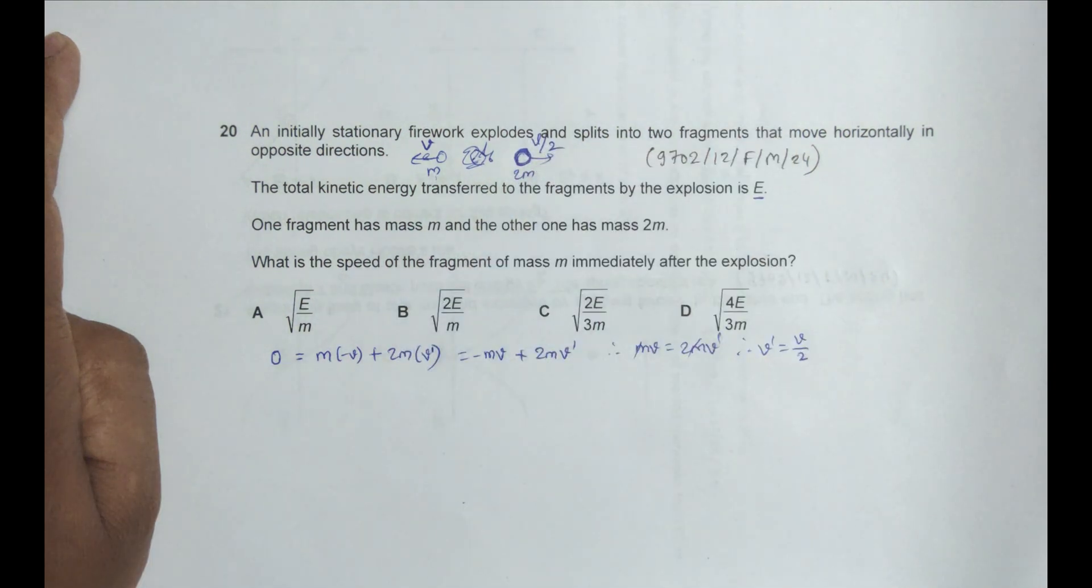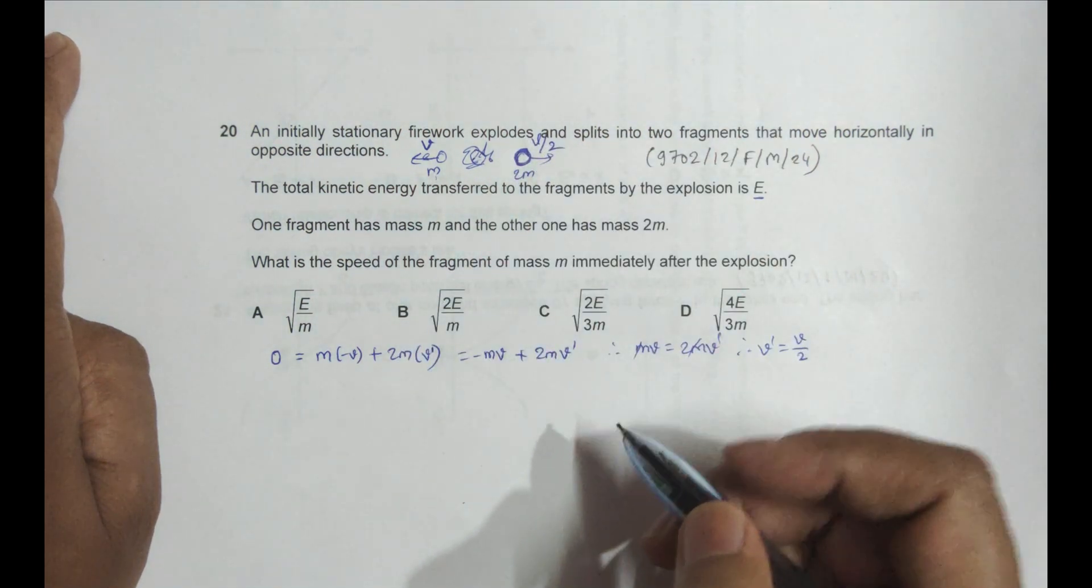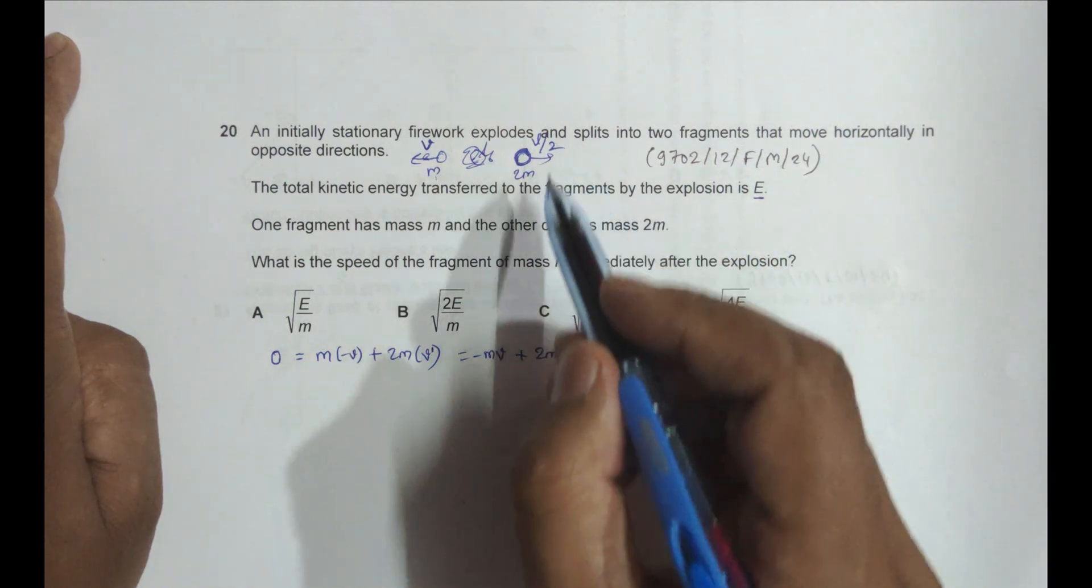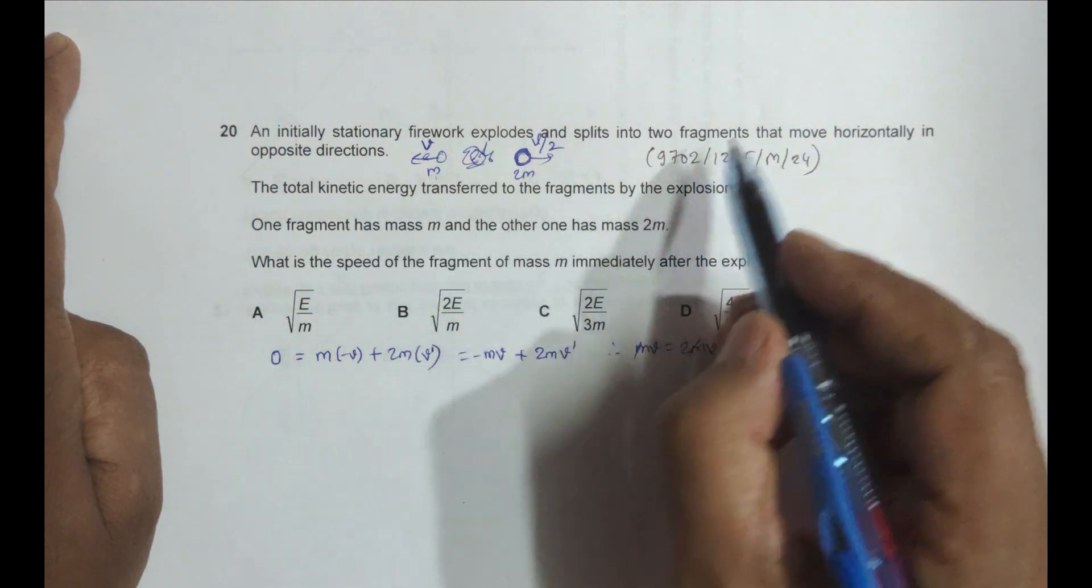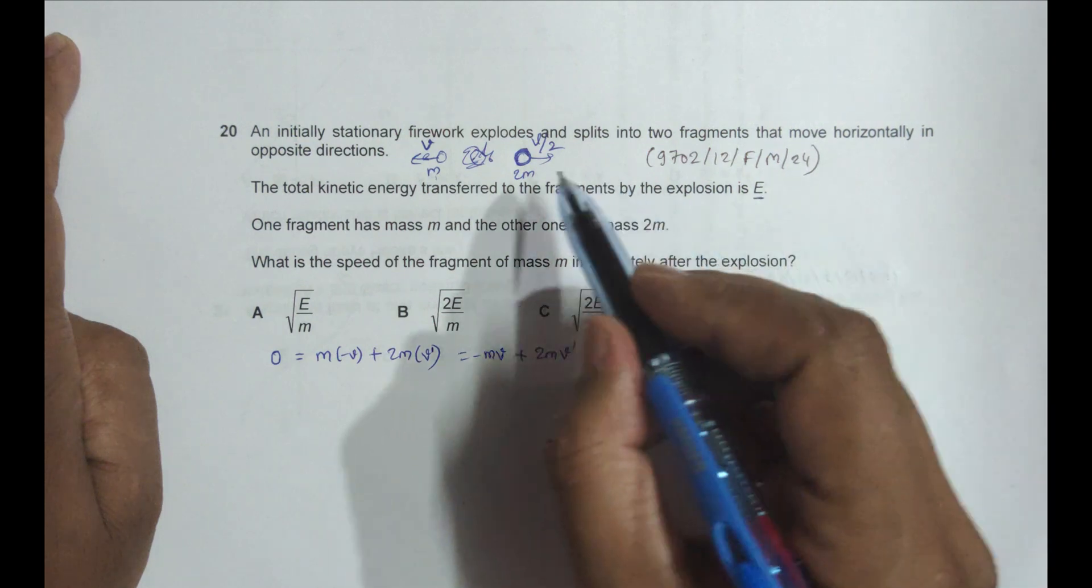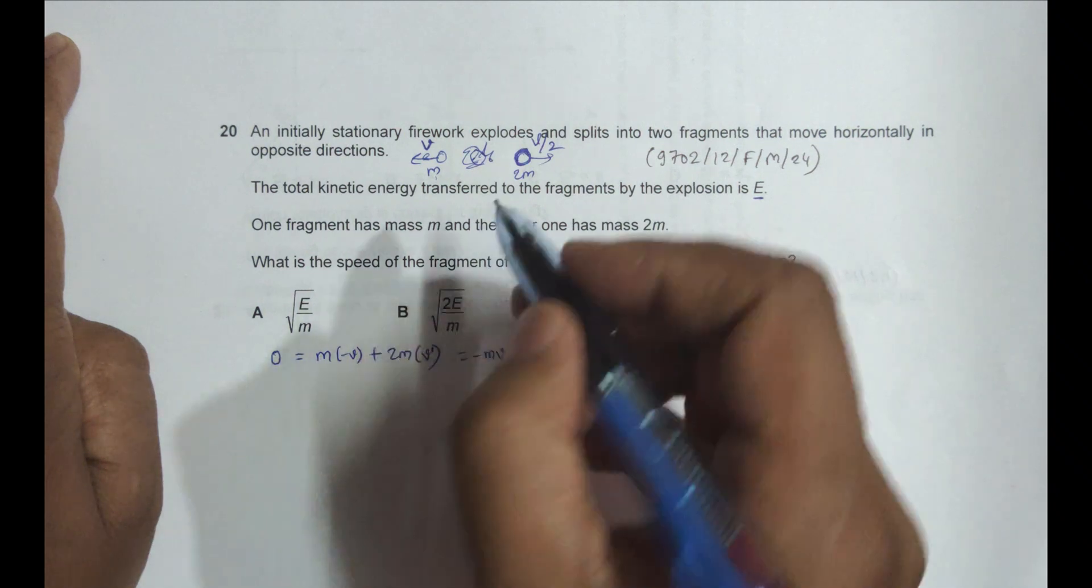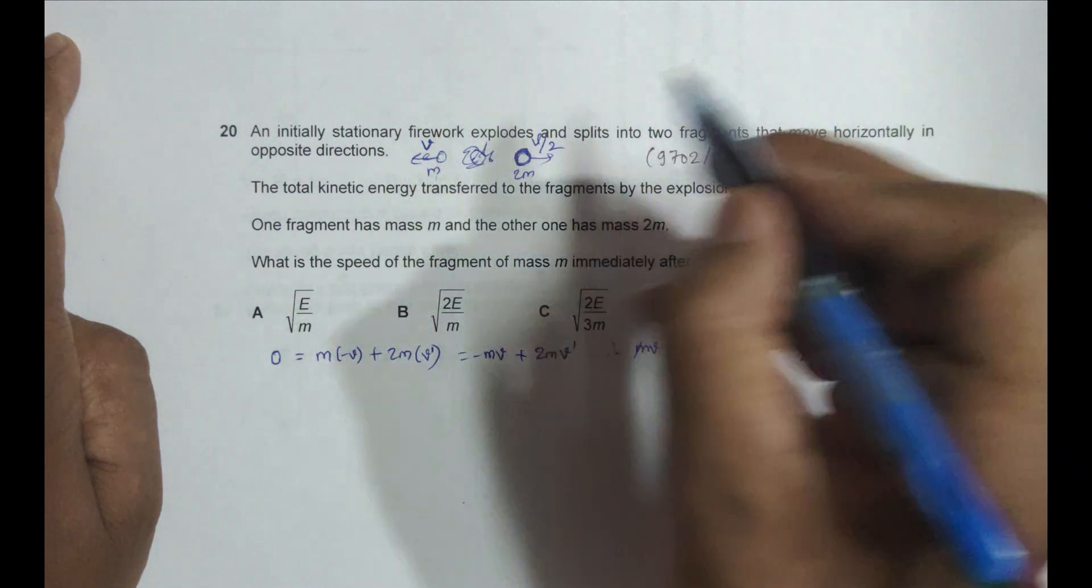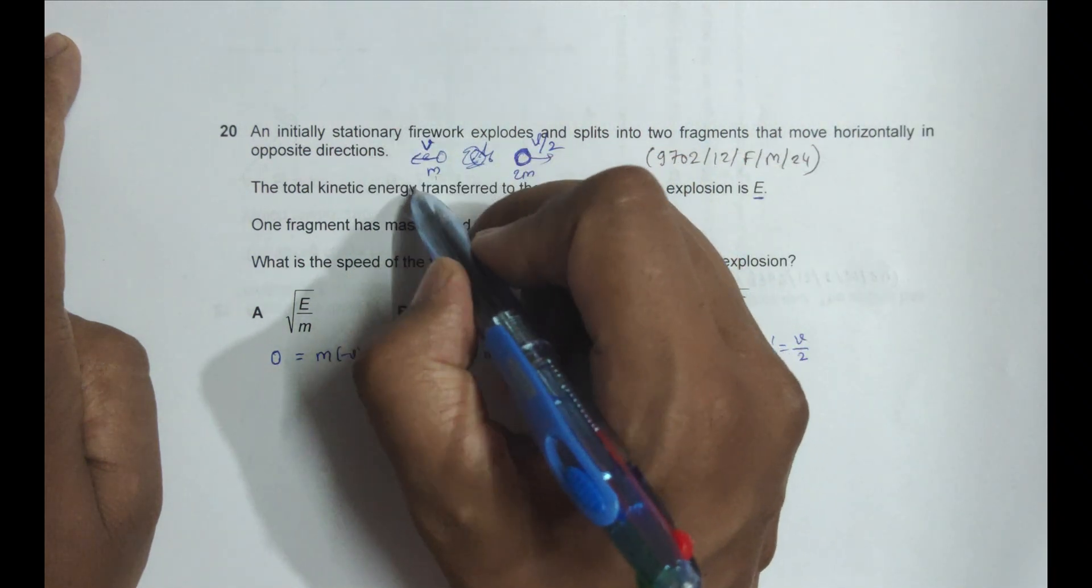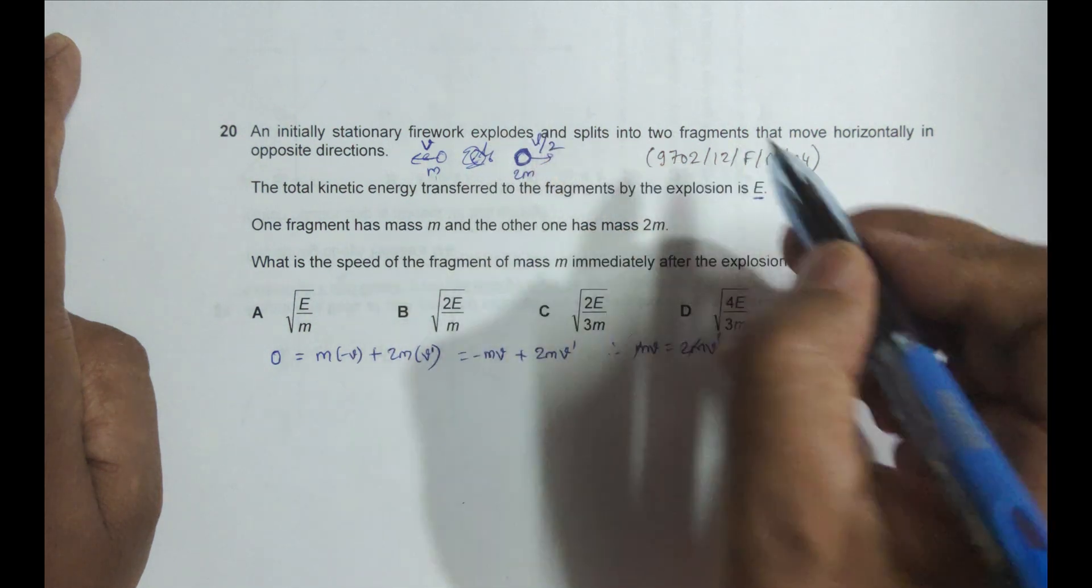Now the initial KE is transformed to the pieces. The sum of the KE of this body and this body should be equal to the initial KE.